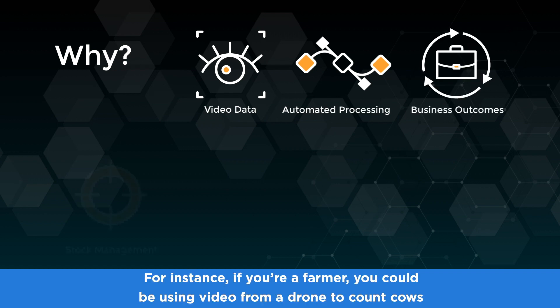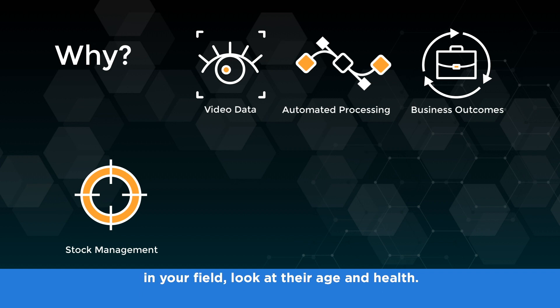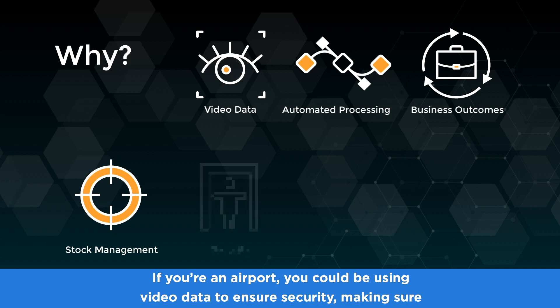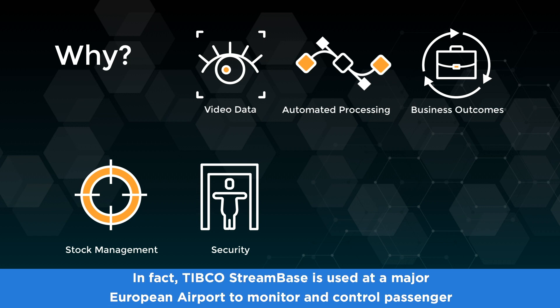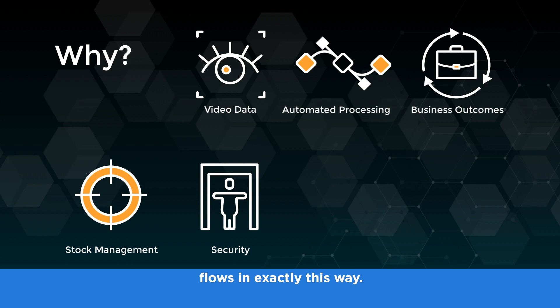Let's look at some examples. If you're a farmer you could be using video from a drone to count cows in your field and look at their age and health. If you're an airport you could be using video data to ensure security, making sure that passenger flow is moving correctly and people aren't going where they're not supposed to. In fact, TIBCO StreamBase is used at a major European airport to monitor and control passenger flows in exactly this way.